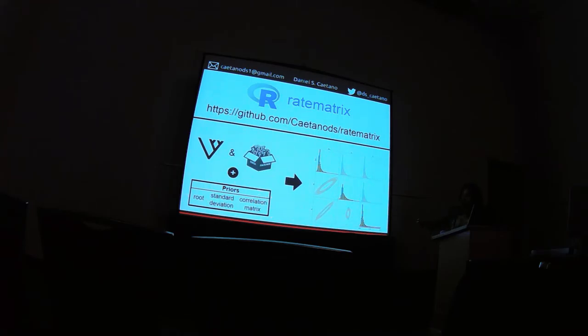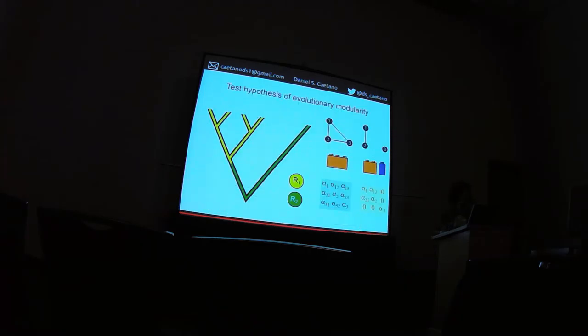So this is now in this package called ratematrix, which you can get from my GitHub. And this is just an overview how the thing works. Of course, if you have the traits and the tree, you can set the prior that you want for the root, the standard deviation, the correlation matrix, which can help a lot the estimation too, when the number of species is low. And we produce these types of plots.